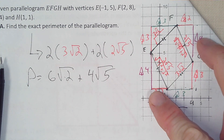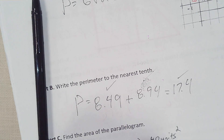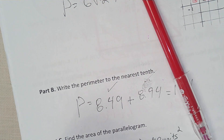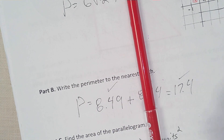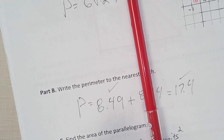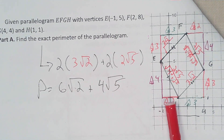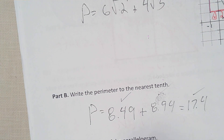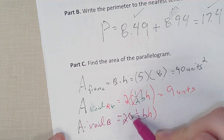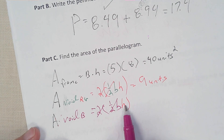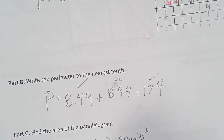The same approach applies to the burgundy void triangles. Those two triangles form a rectangle, so area of the burgundy void equals 2 times one-half base times height, which simplifies to just base times height: 4 times 2 equals 8 units squared.